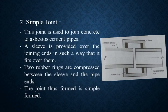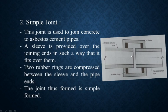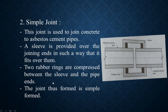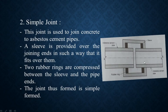This joint is used to join concrete to asbestos cement pipe. A sleeve is provided over the joining ends in such a way that it fits over them. This rectangular frame-type structure is used to fit the joint properly. Two rubber rings are compressed between the sleeve and the pipe ends, attaching the sleeve to the ends of both pipes.